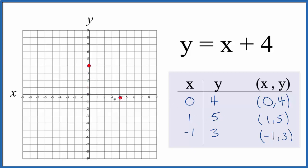Then we have x is 1 and y is 5. After that we've got x is negative 1 and y is 3, and you can see those points all line up.